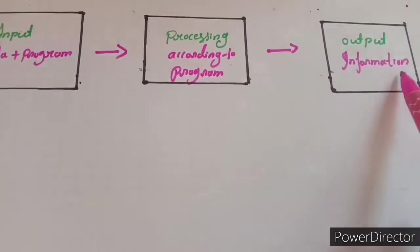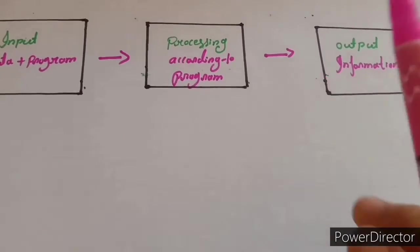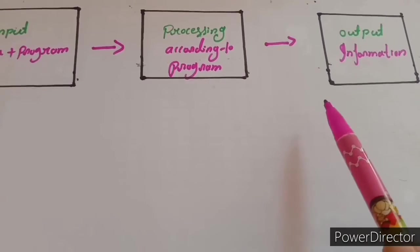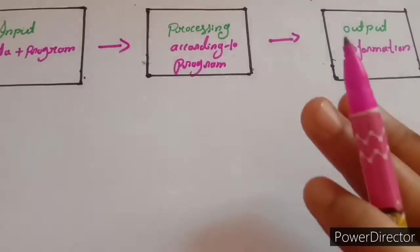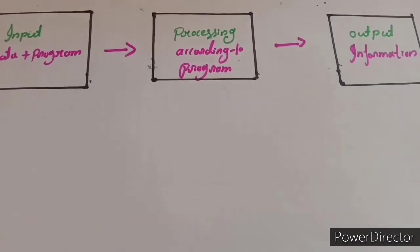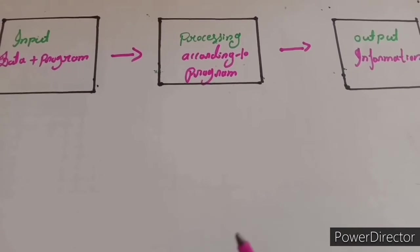The next one is Output. Output is Information. Information Generated by Processing Data Is called Output. It is Displayed By the Monitor Or Printer. This means The computer Processes Input data With the help Of a program To generate Information as Output.